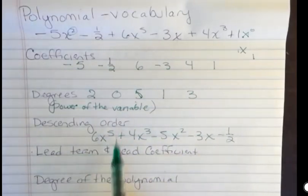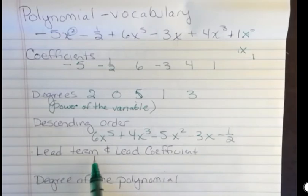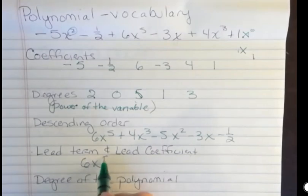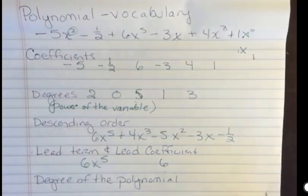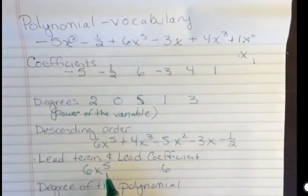Once you have something in the descending order, you can see what the lead term was going to be. The lead term is the term with the highest power. So the lead term here is 6x to the 5th. If I ask what the lead coefficient is, you would say it's 6 because that's the coefficient of the term with the highest power.